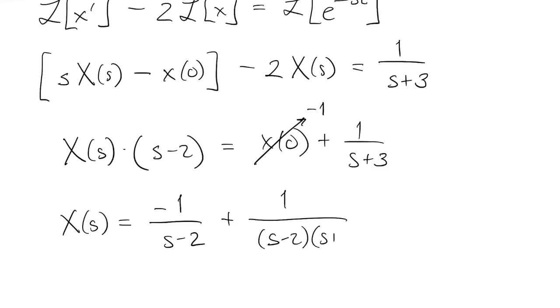So capital X is the sum of two things. The first one is just the transform of negative e to the 2t. The second one is not immediately recognizable,